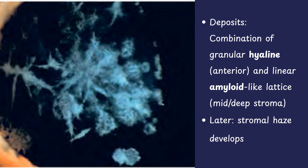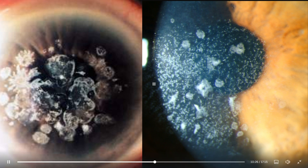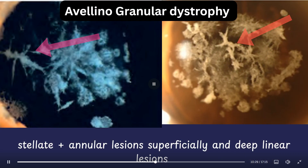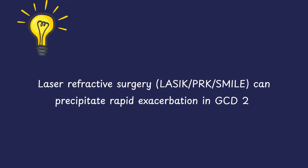Over time, a stromal haze develops, further reducing vision. Clinical images show deposits of different sizes and shapes — some larger, some smaller, some stellate, and even annular figures. When you see a stellate figure superficially along with linear deposits deeper, think of GCD Type 2. An important clinical pearl: patients with GCD Type 2 should not undergo laser refractive surgeries such as LASIK, PRK, or SMILE, as these can trigger rapid progression of the dystrophy.